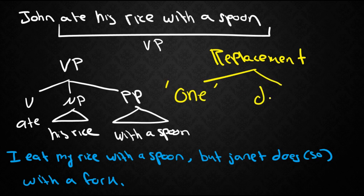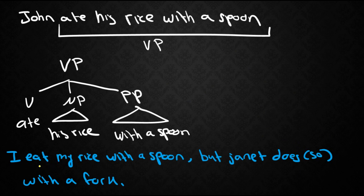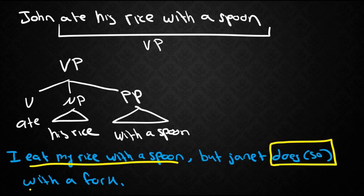For the verb phrase we can replace with do so or does so. Sometimes even so did or so does, or any combination really of that nature. So here we are. I eat my rice with a spoon but Janet does so with a fork.